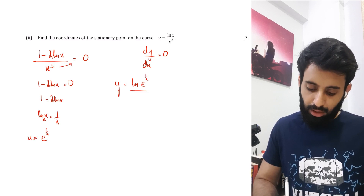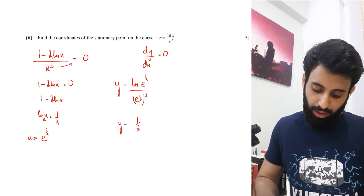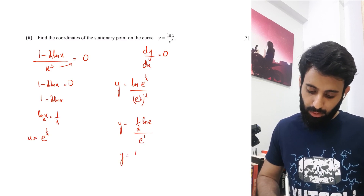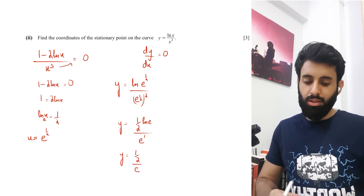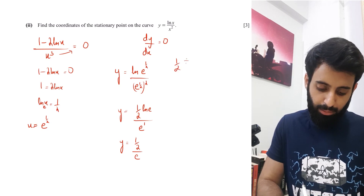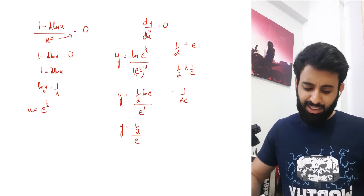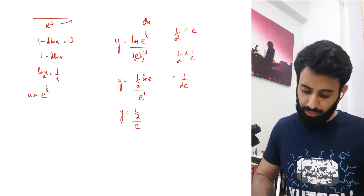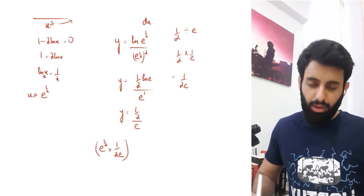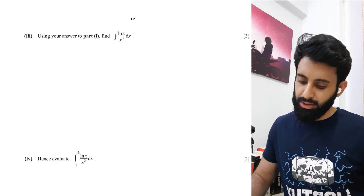y = (1/2)·ln(e) / e^1 = (1/2) / e = 1/(2e). Since the question doesn't specify a required form, the coordinates of the stationary point are (e^(1/2), 1/(2e)), or you can convert to decimal.